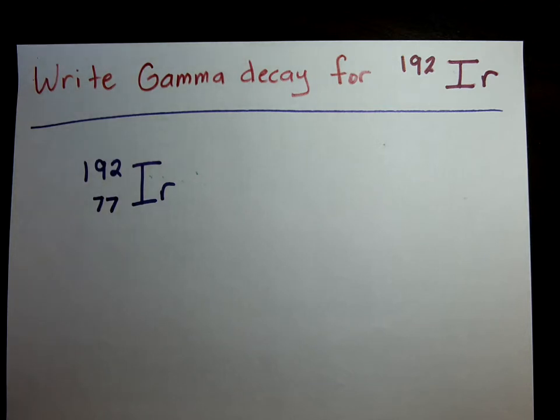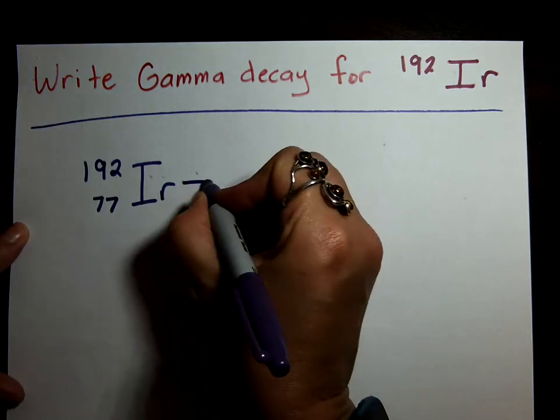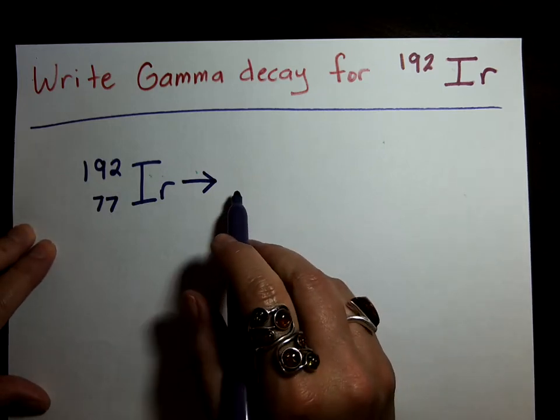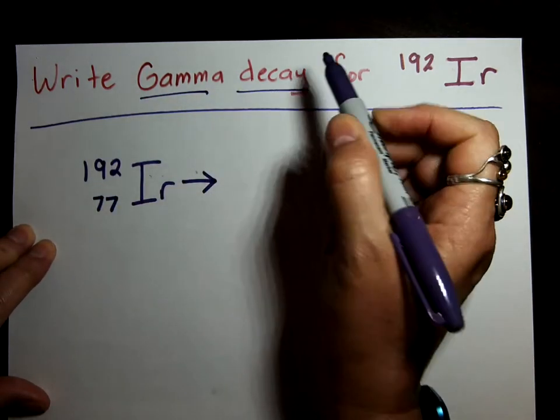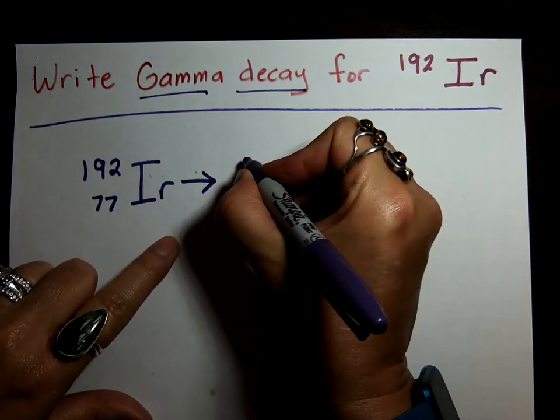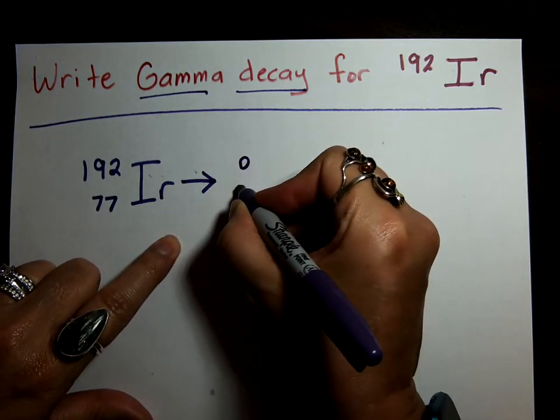What comes next? I hope you said the arrow. Good job if you did. Now, gamma is emitted, which is why it's called gamma decay or emission. What's the symbol? What's the symbol for a gamma ray? Yeah, it's 0, 0, gamma.